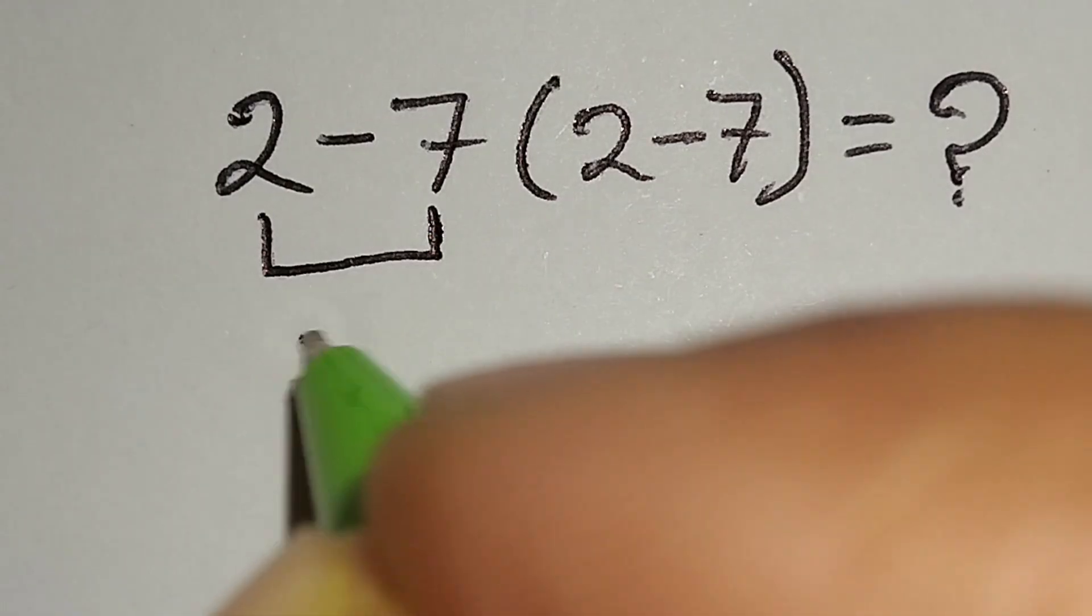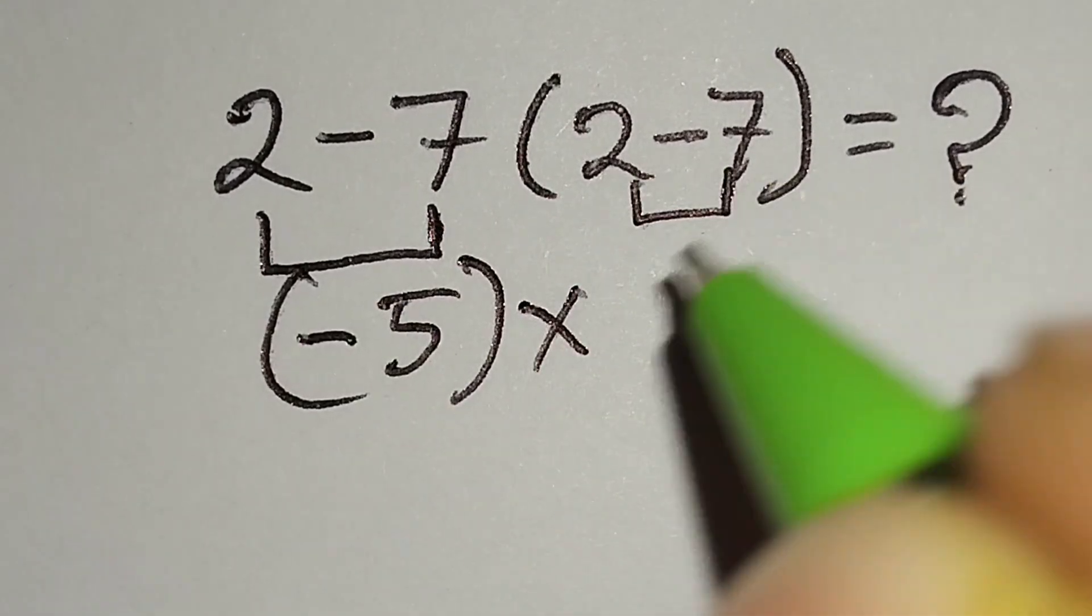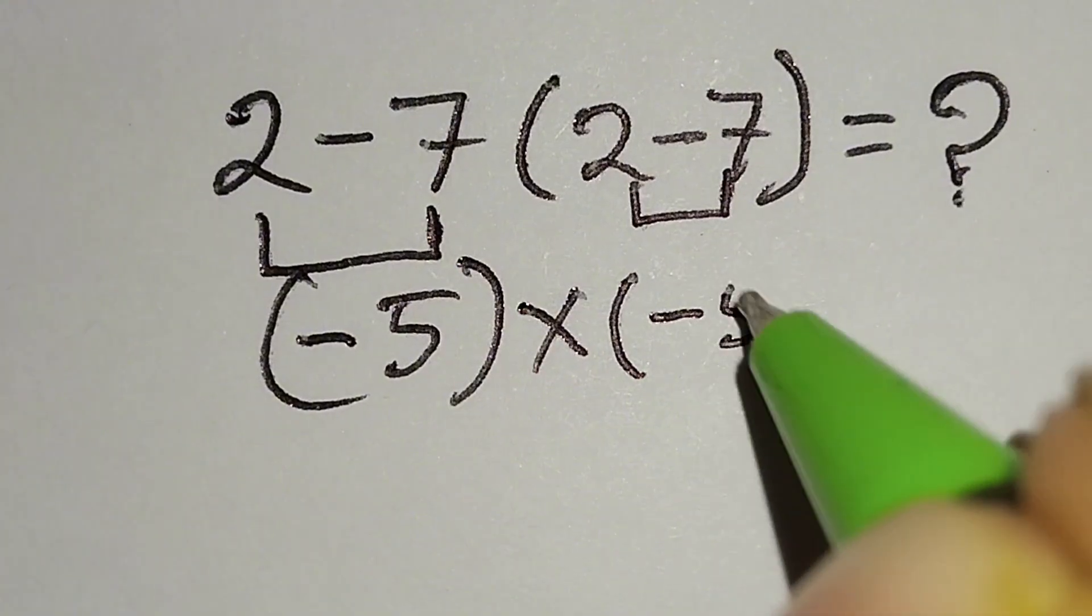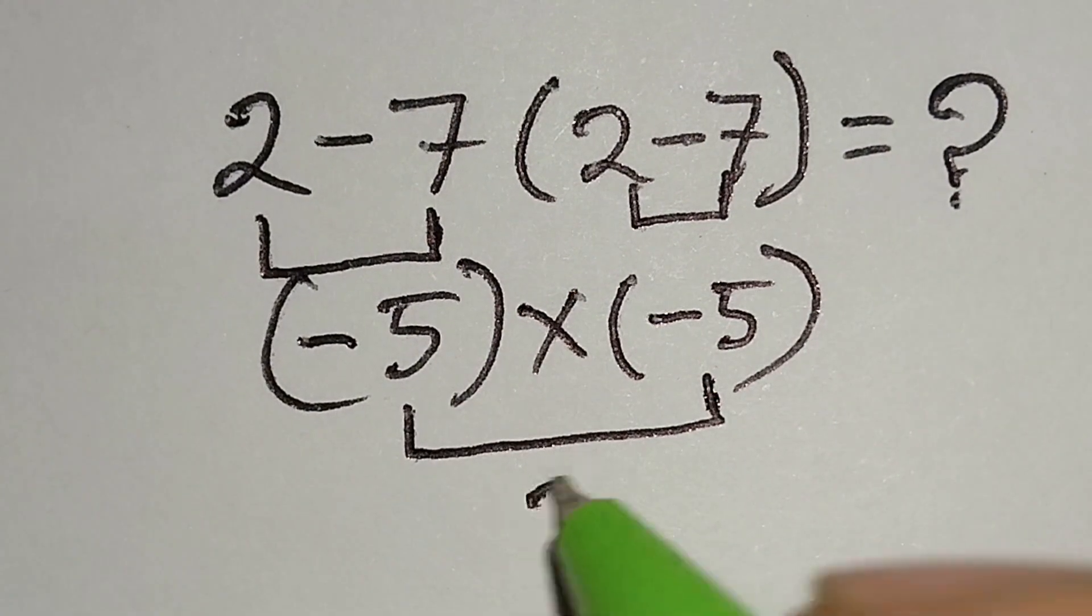Here 2 minus 7 gives us negative 5. Multiply this, 2 minus 7 gives us negative 5. Negative 5 times negative 5 gives us positive 25.